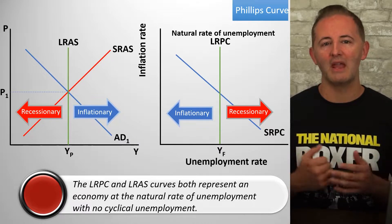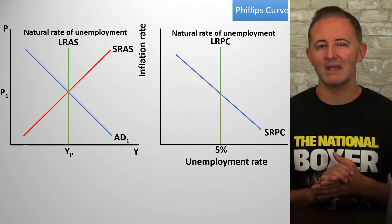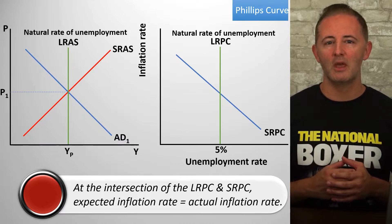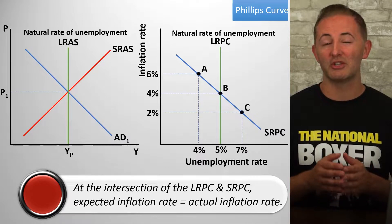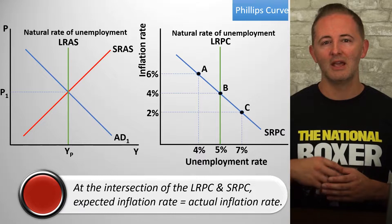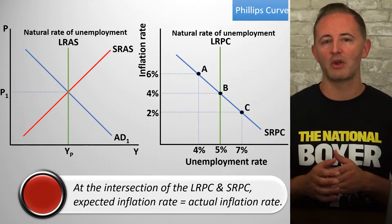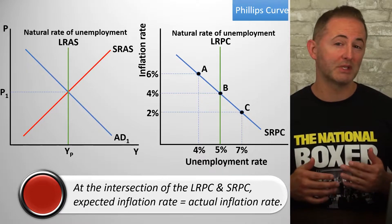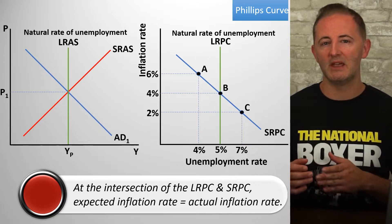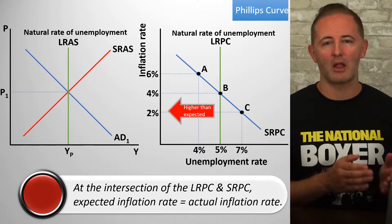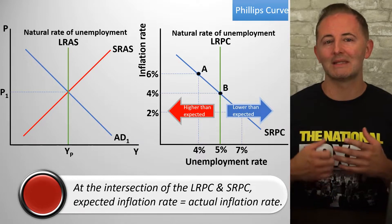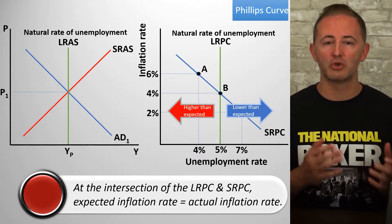Again, basically the mirror image of the ADAS model. The next thing that's really important to understand is that at the intersection of the SRPC and the LRPC, the actual inflation rate is equal to the expected inflation rate. We have three points in this model: A, B, and C. At point B, the inflation rate is 4%, and since we're intersecting with the LRPC, we know that 4% is also the expected inflation rate. At point A, the inflation rate is 6%, which is above the expected rate, and at point C, the inflation rate is only 2%, which is below it. As long as we know that the intersection of the SRPC and LRPC gives us the expected inflation rate, we would know that anywhere to the left of the LRPC, actual inflation is greater than expected, and anywhere to the right of the LRPC, actual inflation is less than expected. This is extremely important when we go from the short run to the long run.